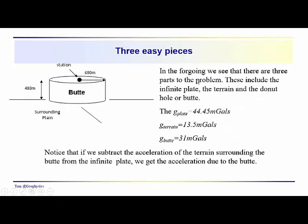Three easy pieces. We've talked about the plate correction, the terrain correction, the acceleration due to gravity of the butte all by itself. And notice that they all fit together. They're parts of a puzzle. The plate is basically everything. It includes the butte plus the surrounding terrain, which is not there, so it's an infinite plate. It's 44.45 milligals. The terrain, in other words, all this material that extends out from the edge of the butte to infinity has an influence of 13.5 milligals, and the butte is 31 milligals, or basically just take the terrain away from the infinite plate, and then you get 31 milligals, the acceleration due to gravity of the butte.